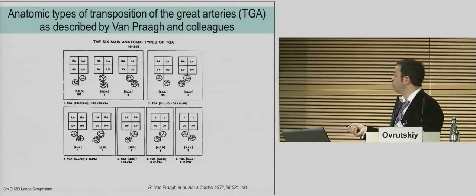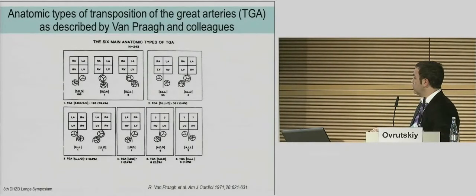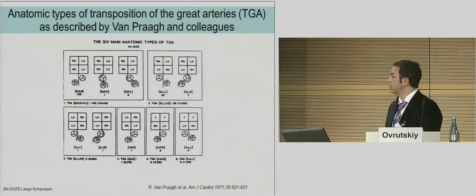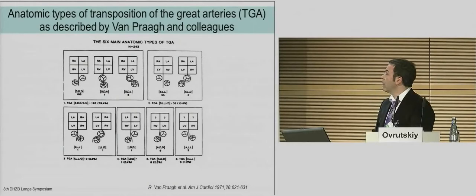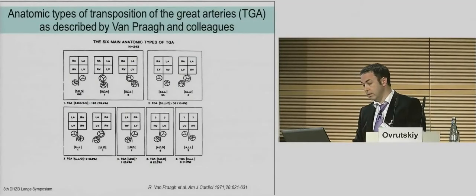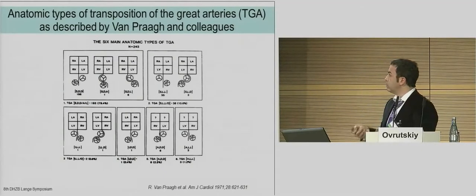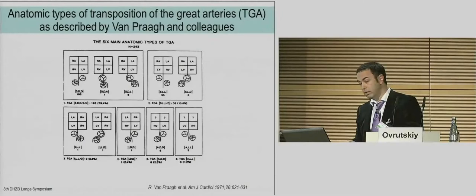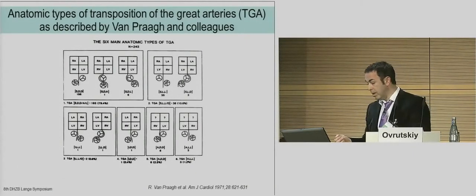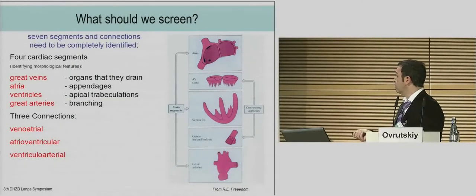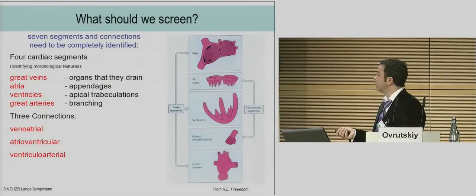This picture is from the publication by Van Praag, American Journal of Cardiology 1972: six main anatomic types of TGA. I do not think we can find a seventh one even with one hour of echocardiography. Our goal is not to classify the type, but to understand the relations between the atria, the atria to the ventricles, and to the great arteries for optimal surgical planning.